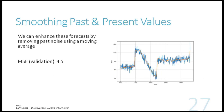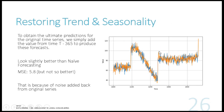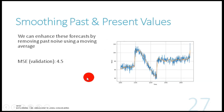To improve further, instead of adding back the original past values, we add back the smoothed past values — applying moving average on the past values first to reduce noise before adding them back to the moving average of the differenced time series. This yields a much better figure: the MAE drops from 5.8 down to 4.5.